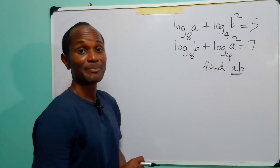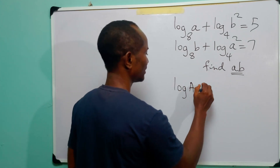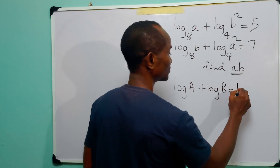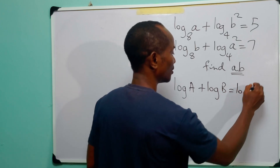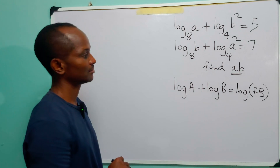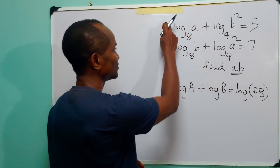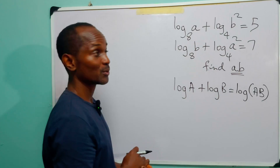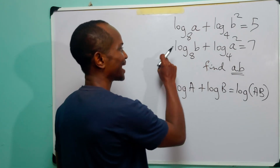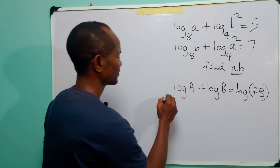First of all, let us remember the law of logarithms that says log a plus log b is equal to log(a multiplied by b). Looking at these two equations, we know that we will get a term in ab by adding the two equations together.